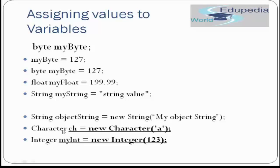Moving forward, we are creating an object of the Character class: Character ch equals to new Character, passing a character in single quotes — so it is of object type. Similarly, Integer myInt equals to new Integer(123). The value passed is 123 and the object created is called myInt. This shows the difference between an object type variable and a primitive type variable, placed here so you can compare them side by side.